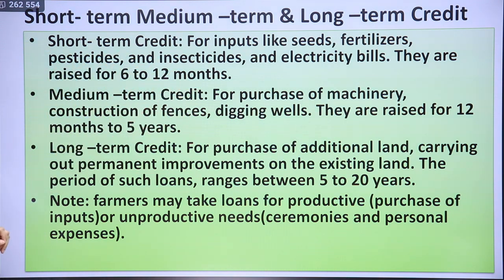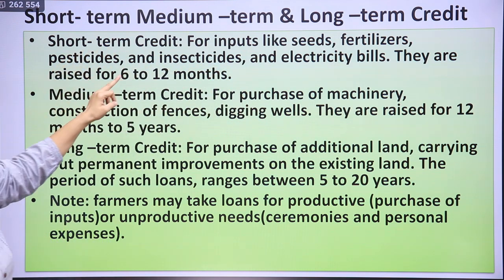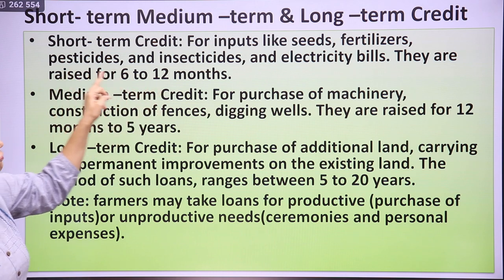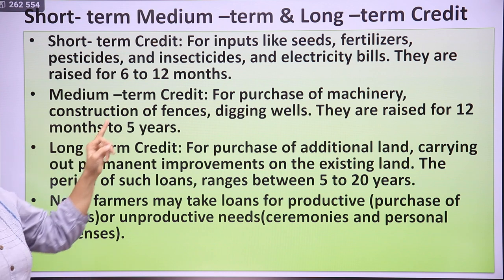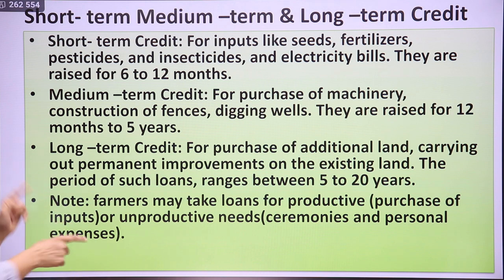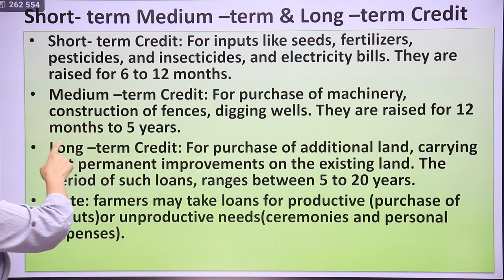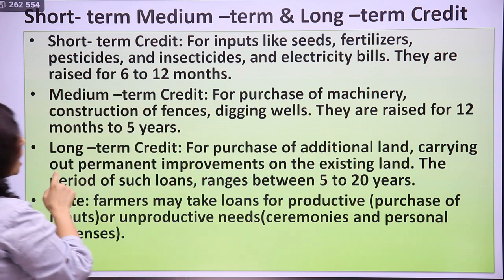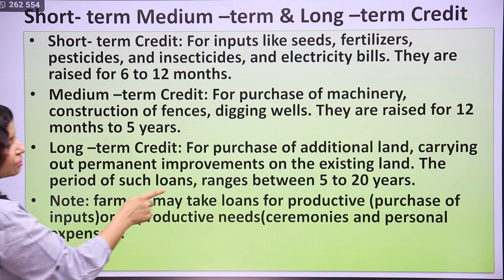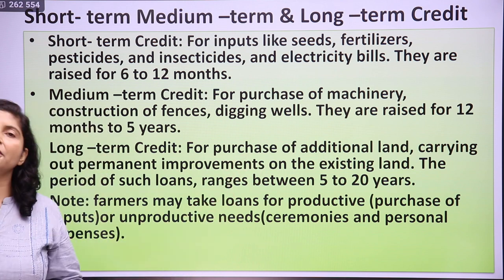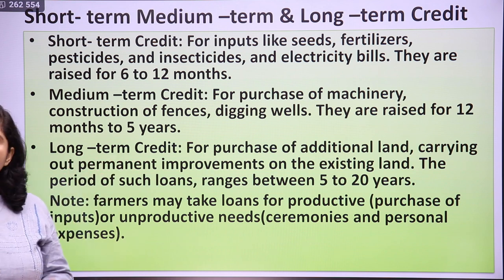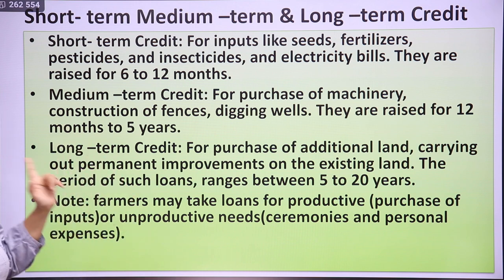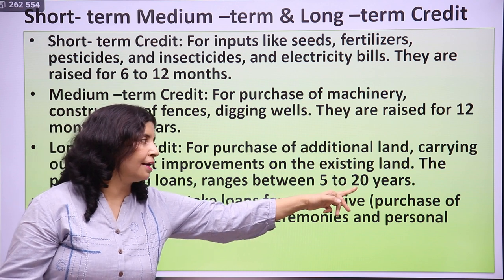Short-term credit is for inputs like seeds, fertilizers, pesticides, and insecticides, raised for 6 to 12 months. Medium-term credit is for purchase of machinery like tractors and for construction of fences or digging wells, raised for 12 months to 5 years. Long-term credit is for purchase of additional land and carrying out permanent improvements on existing land, with a period ranging from 5 to 20 years. When you need additional land for farming, the cost is very high and can only be repaid over a long duration.